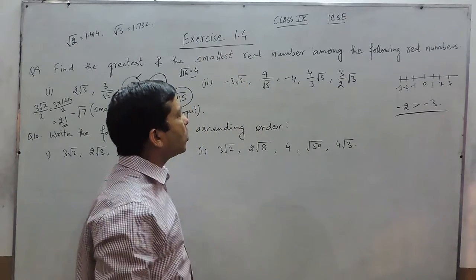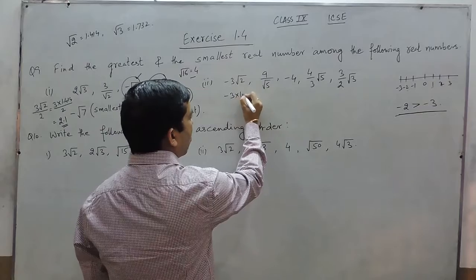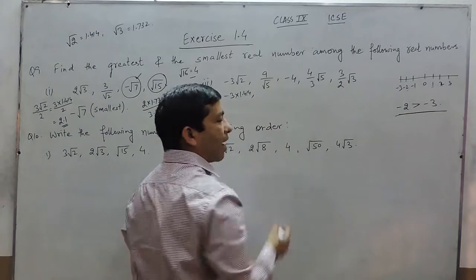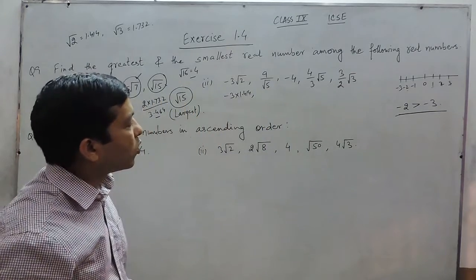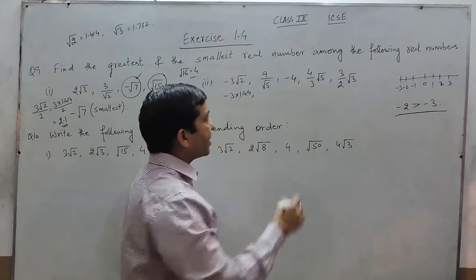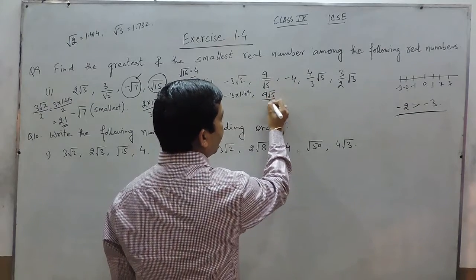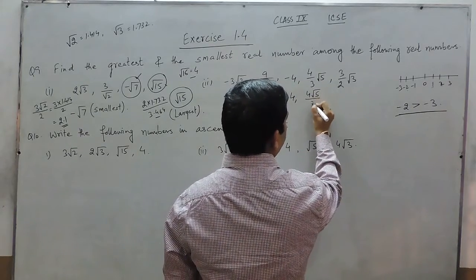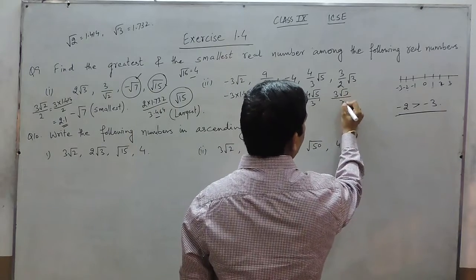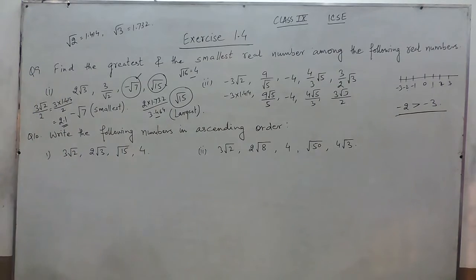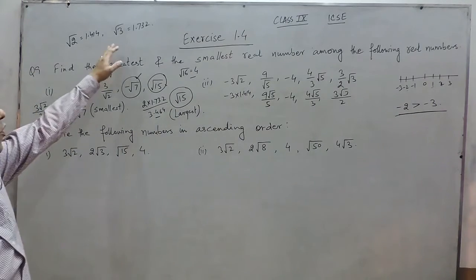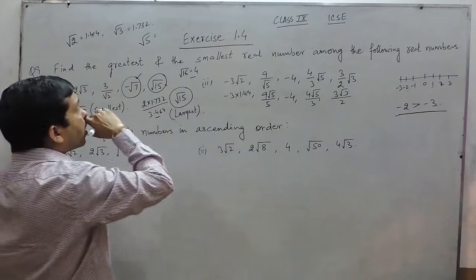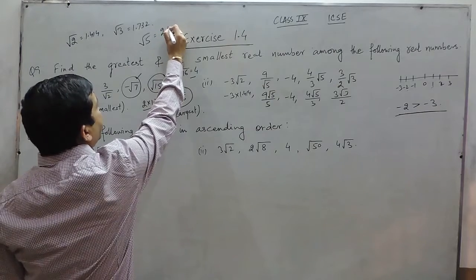When we talk about minus 3√2, this can be written as minus 3 into 1.414. When we talk about 9 upon under root 5, we have to multiply and divide by root 5 to rationalize the denominator, giving 9√5 upon 5. One of the numbers is already minus 4. Another is 4√5 upon 3, and another is 3√3 upon 2. The value of root 2 is 1.414, root 3 is 1.732, and under root 5 is approximately 2.2.